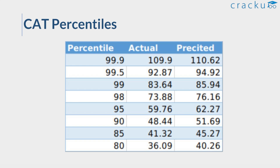Finally, looking at our predicted percentiles versus actual scores: there is not much difference between our predicted scores and the actual scores for most percentiles. In the lower ranges, there is some difference. For higher percentiles, the difference was around two to three marks only. In the lower ranges, the difference was slightly higher — around four marks — but at the higher percentile ranges our predicted numbers were pretty close to the actual numbers.